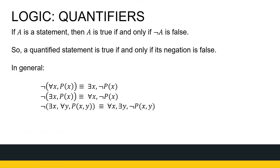Let's look at the negation of statements. If I've got a quantified statement, what does negating it mean? If I say 'for all x, something is true,' the negation is that there exists an x for which that thing is false. The negation is not that it's always false — it means there must be some x for which it's false. Conversely, if I say 'there exists an x for which a statement is true,' the negation is 'for all x, it's not true.' The negation of 'there exists' is 'for all,' and the other way around.